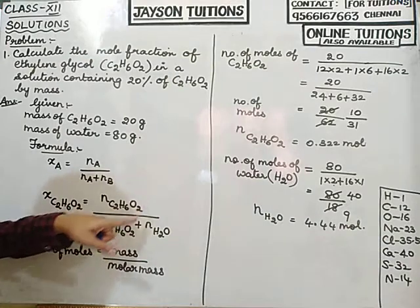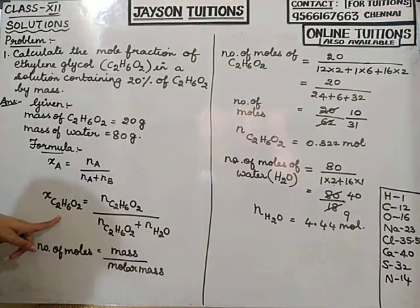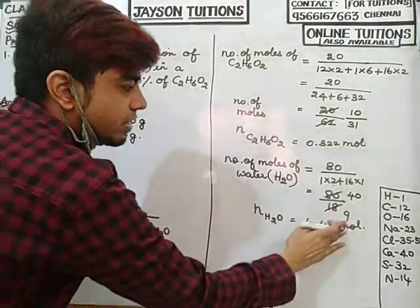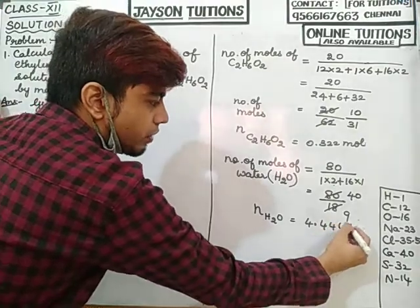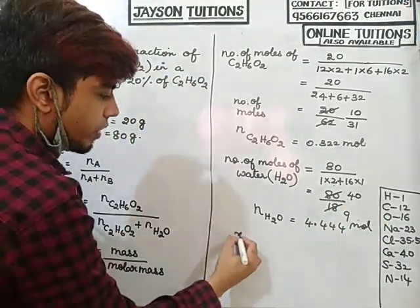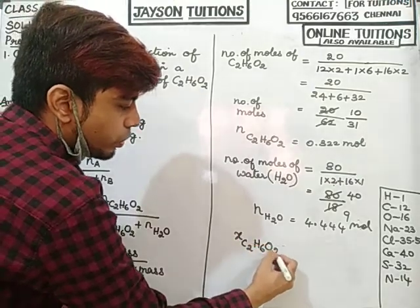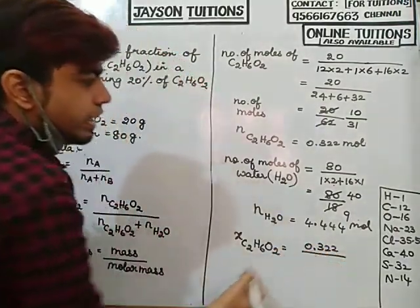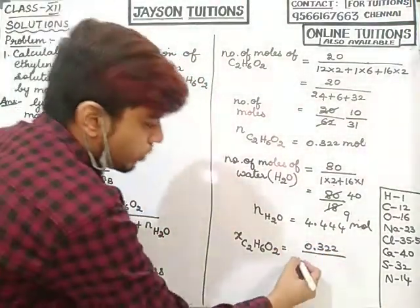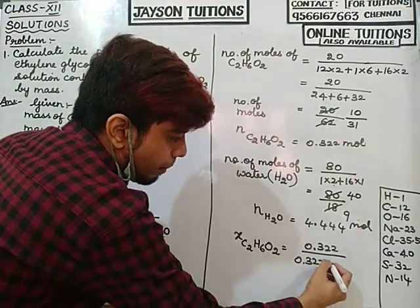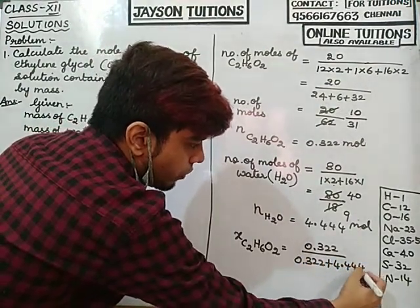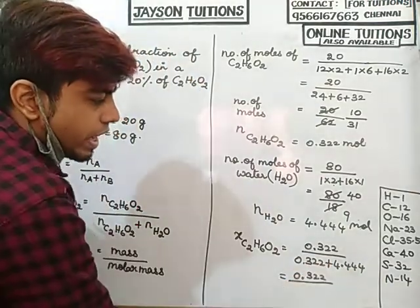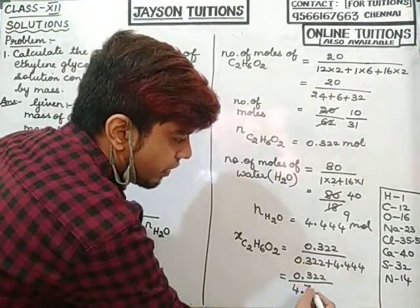Now I know all values and will substitute into the mole fraction formula. Mole fraction of C₂H₆O₂ equals number of moles of ethylene glycol divided by total number of moles: 0.322 divided by (0.322 + 4.444), which gives 0.322 divided by 4.766.